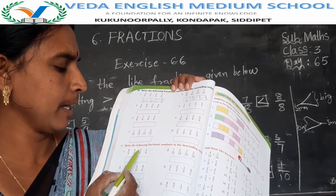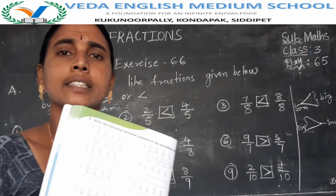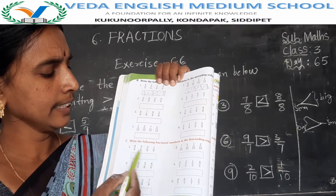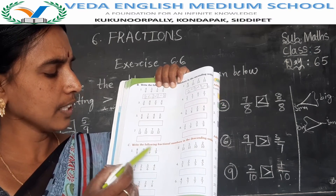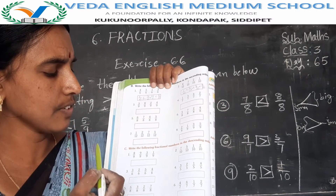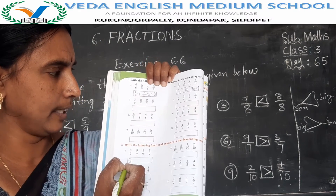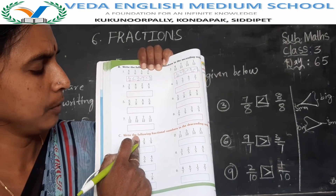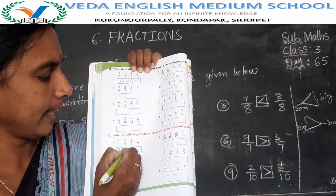Descending order. See Nana: 8 by 9, 9 by 9, 3 by 9, 1 by 9. Descending order means arrange the numbers from bigger to smaller. In these fractions the denominators are the same, but numerator changes. Compare the numerators: 8, 9, 3, 1 — which one is the biggest? 9. So the first fraction is 9 by 9. Next compare the remaining: 8, 3, 1 — which one is bigger? 8. So next fraction is 8 by 9.